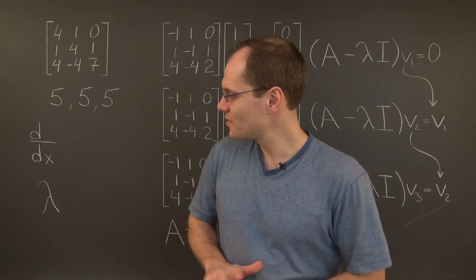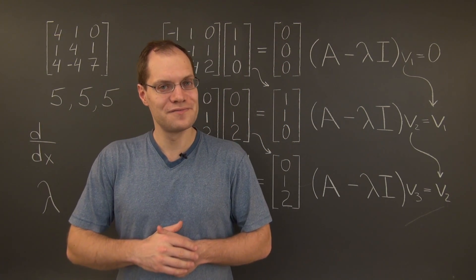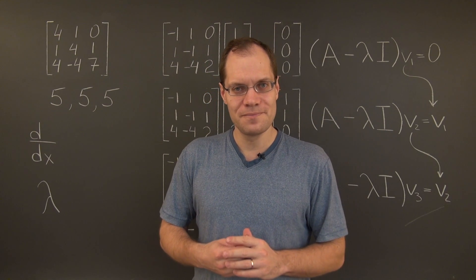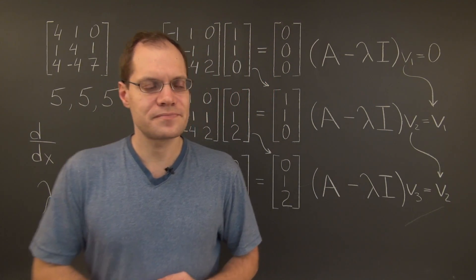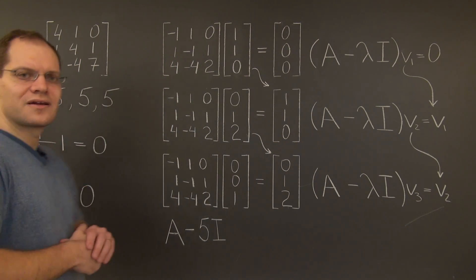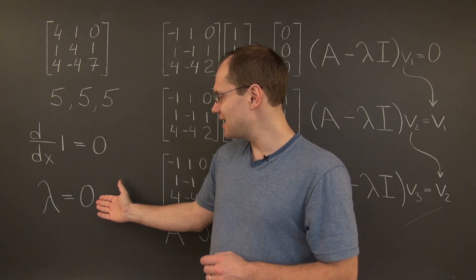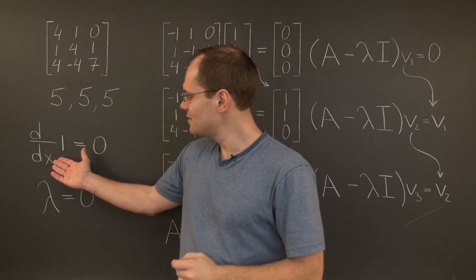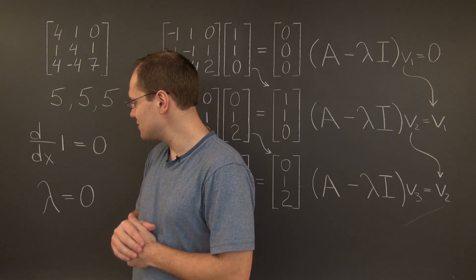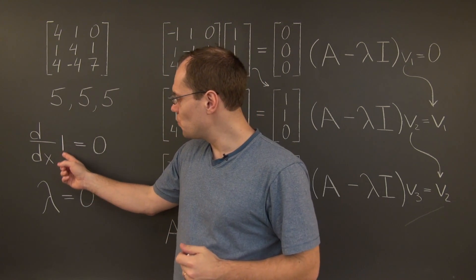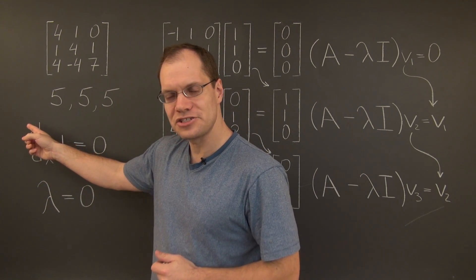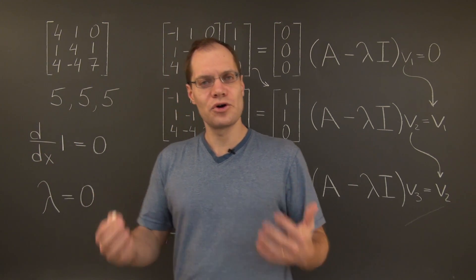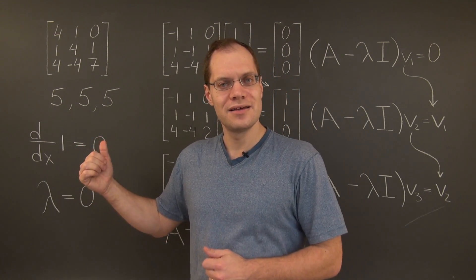Now let's apply these ideas to the transformation of the derivative on the space of cubic polynomials. We know that it has an eigenfunction that's a constant polynomial, and the corresponding eigenvalue is 0. And because the corresponding eigenvalue is 0, the linear transformation A minus 0I is still just this transformation. So 1 is the eigenvector. Now the question is: is 1 also in the range of this transformation? And we know that of course it is — the preimage of 1 is x.